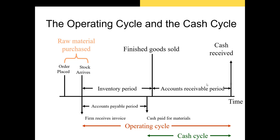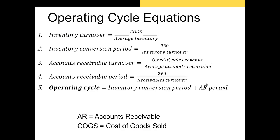There are a number of terms we can use to calculate the length of the operating cycle. To calculate the operating cycle, we need to start off calculating the inventory turnover of the firm — that's just cost of goods sold divided by average inventory. A lot of times we'll use inventory at the end of the fiscal year plus inventory at the beginning of the year divided by two, essentially trying to get an average measure.